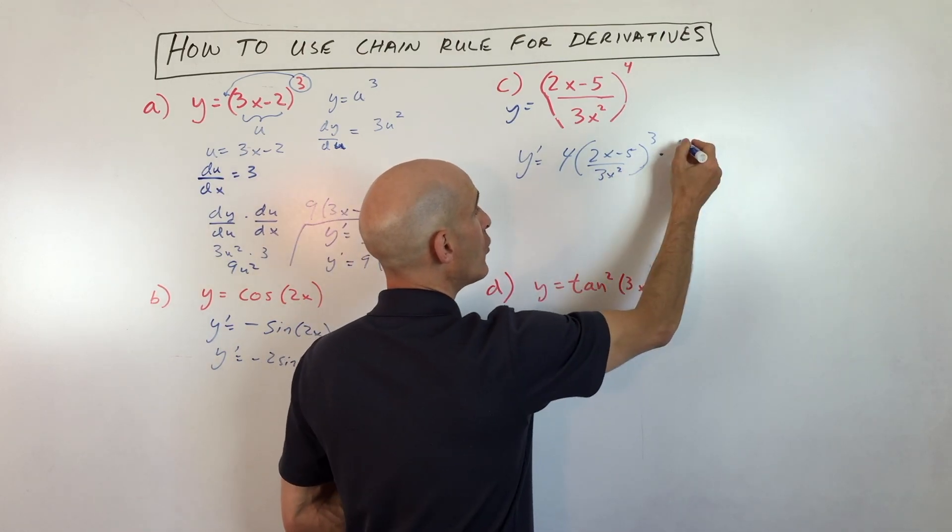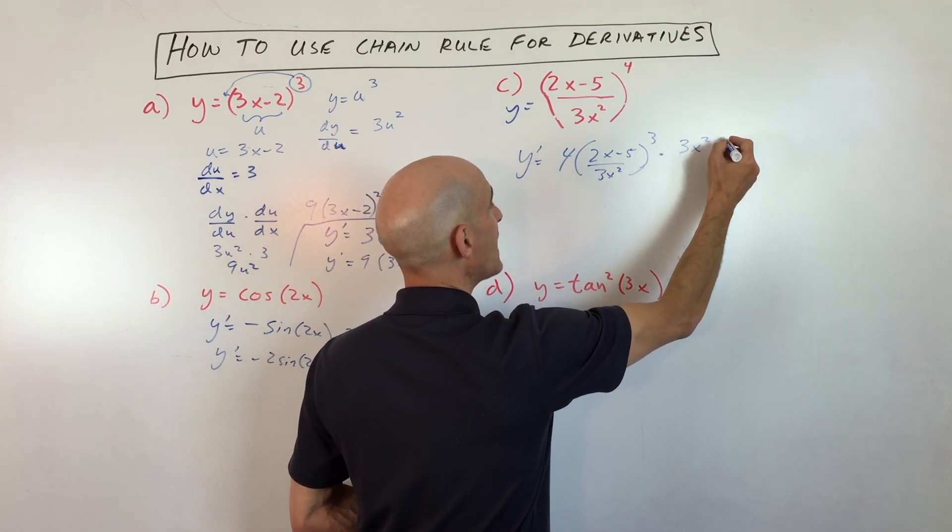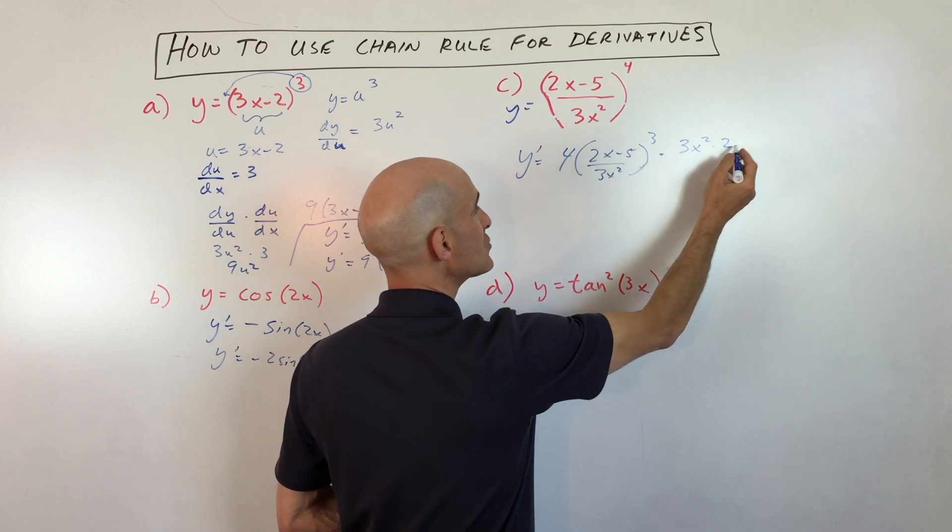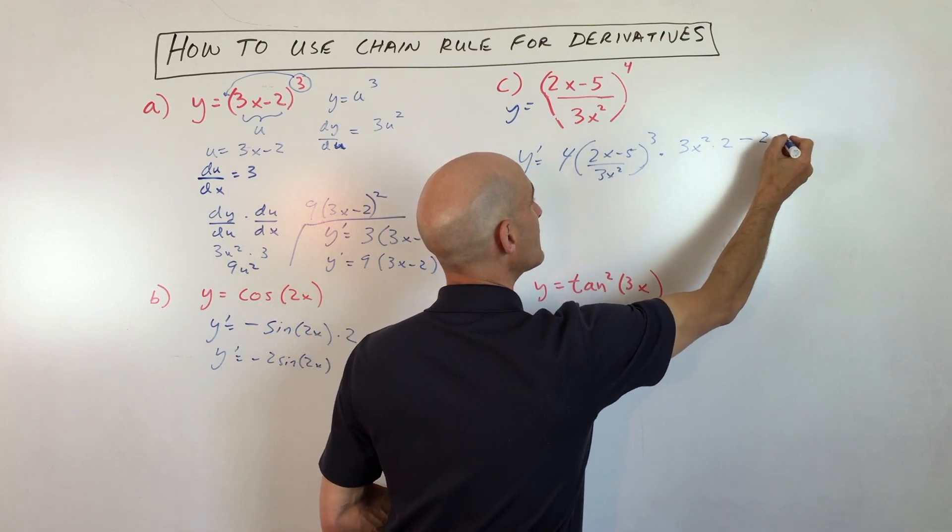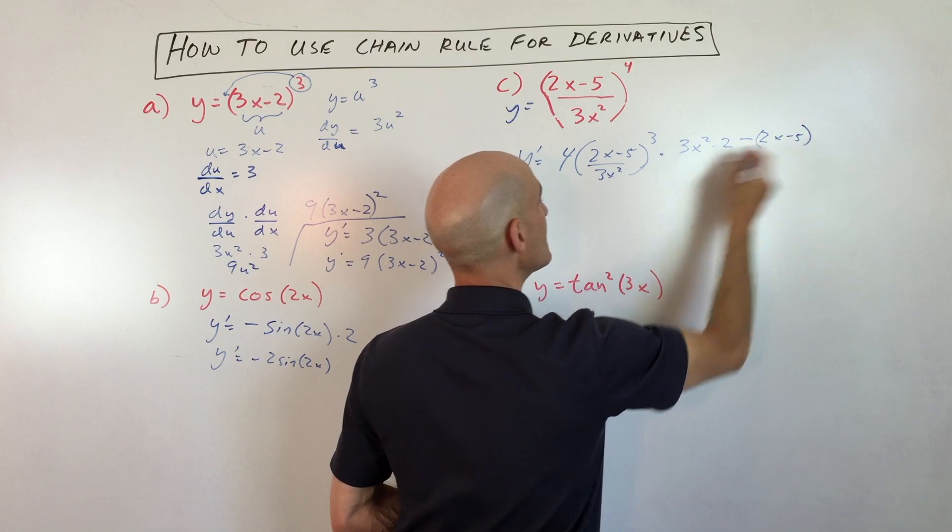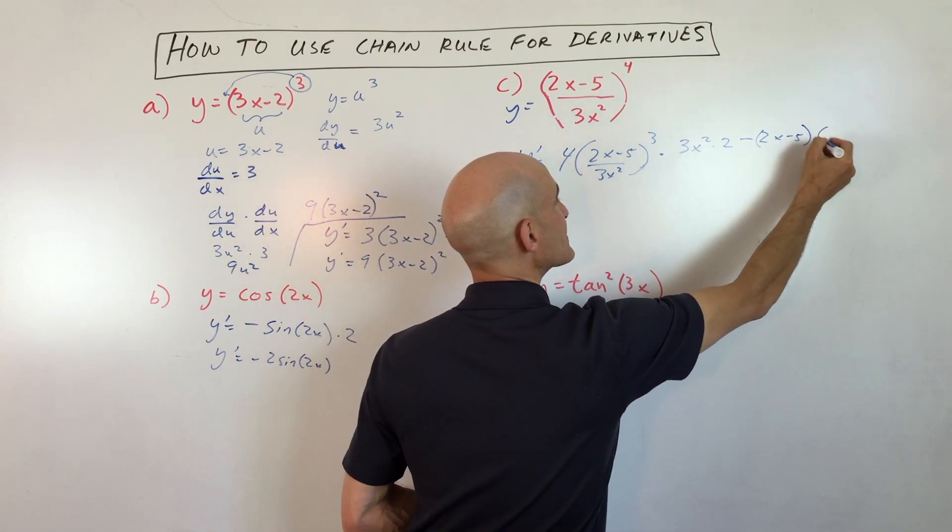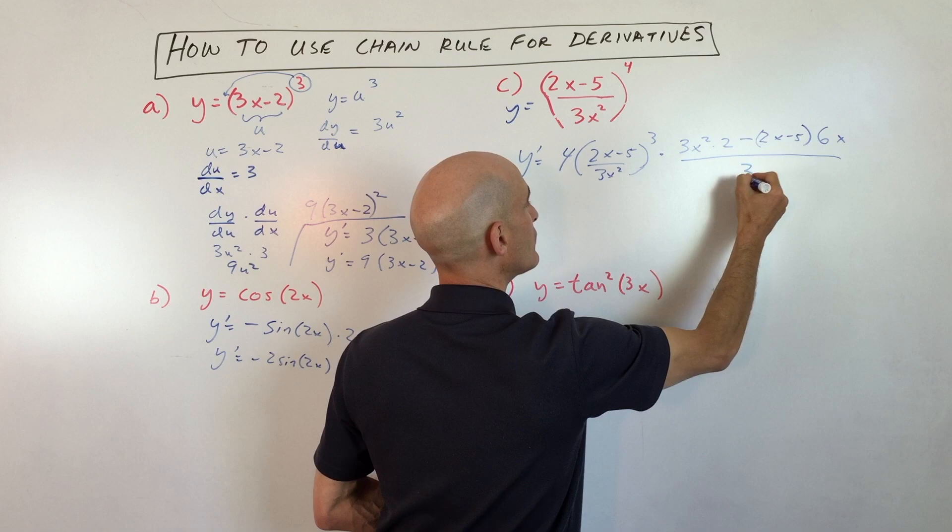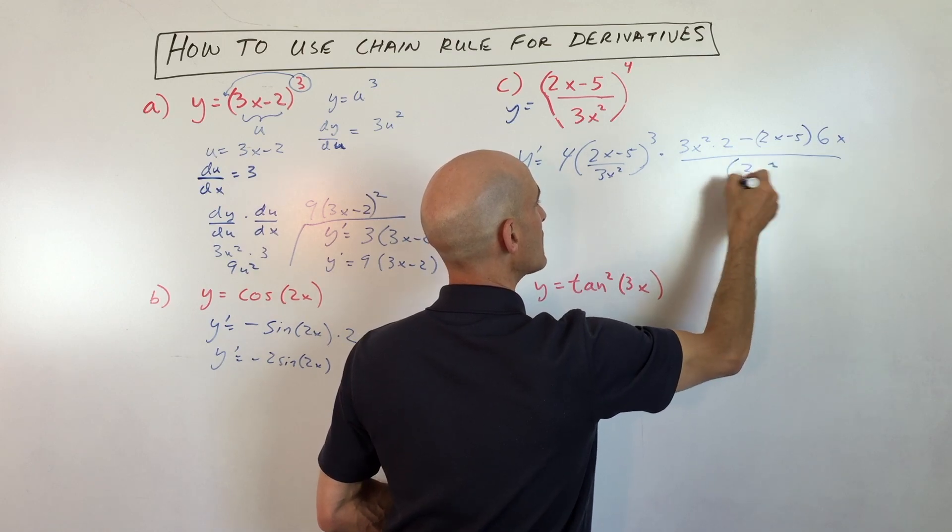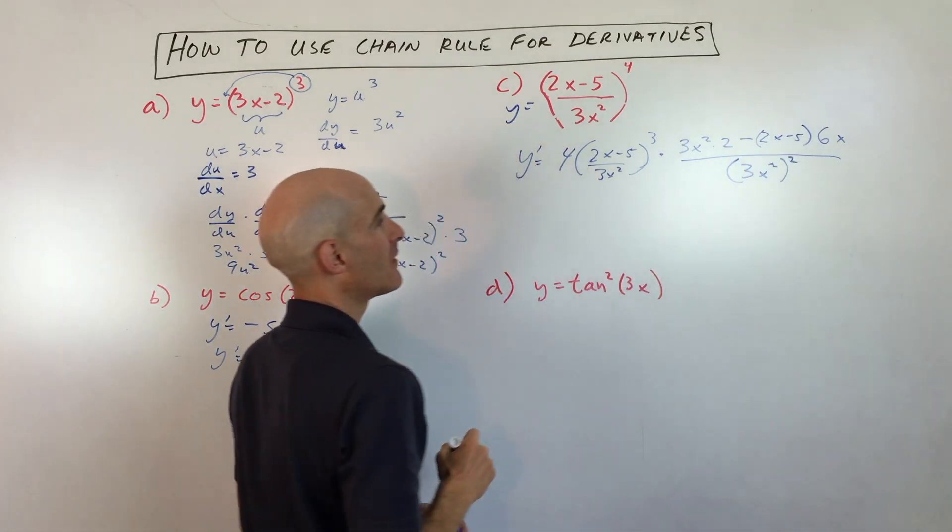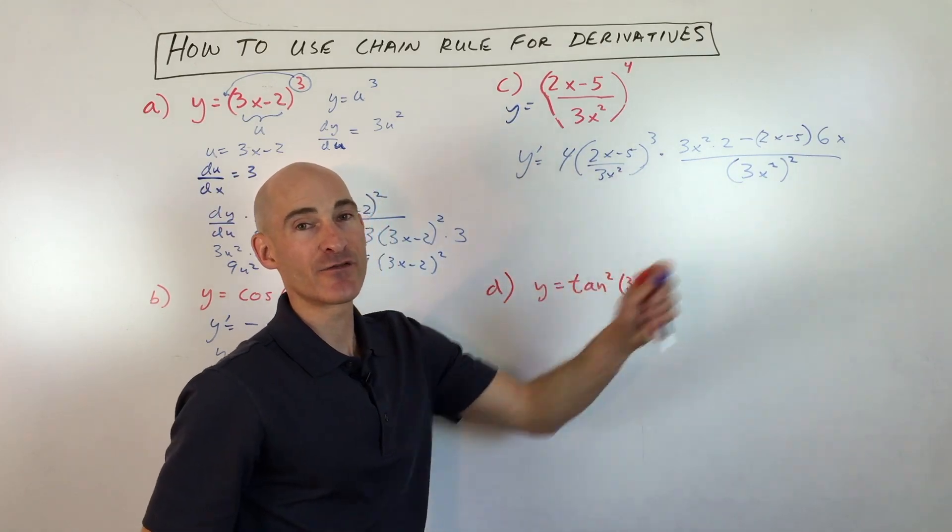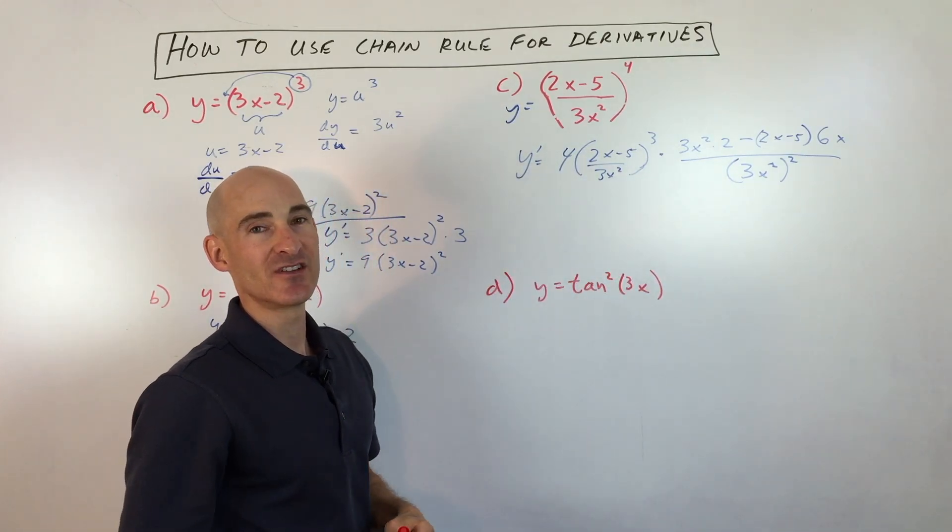So we're multiplying by: low, 3x squared, times d-high, derivative of 2x minus 5 is 2, minus high, 2x minus 5, times d-low, the derivative of 3x squared is 6x, over the square of what's below, so (3x squared) squared. Then you can go ahead and simplify that further, but for right now I'm just going to leave it like that.